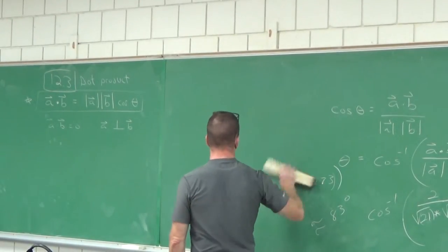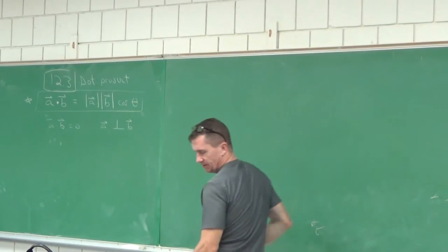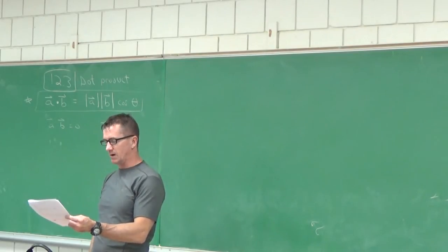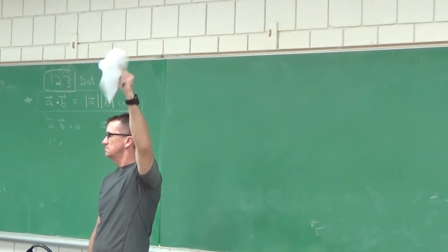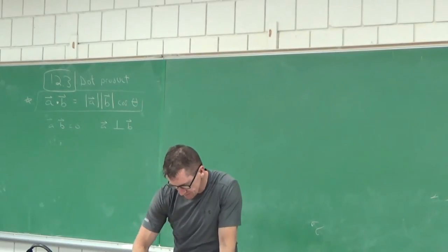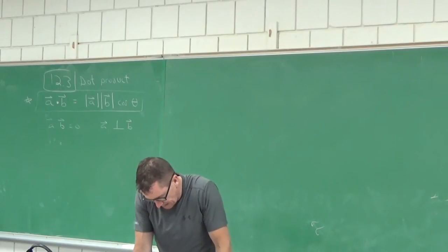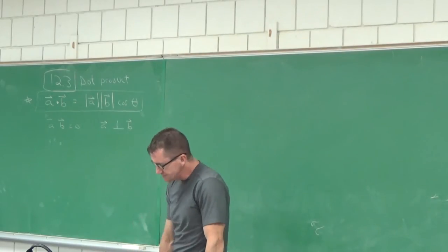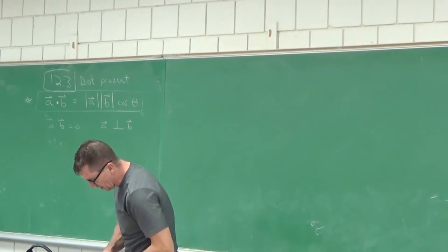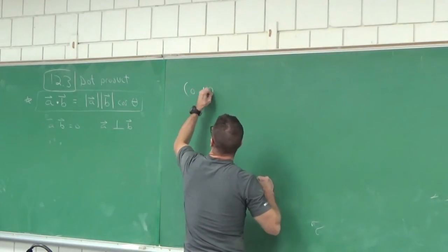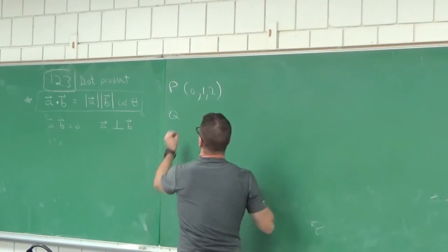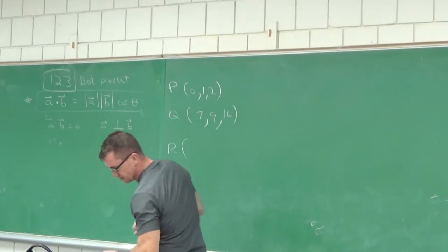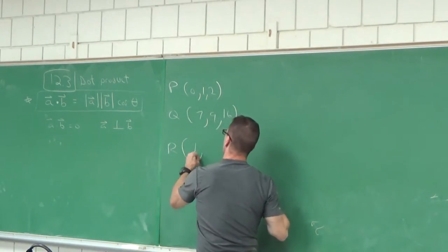So we can find the angle between two vectors. Here's a problem like in the practice set — what if you were given three points forming a triangle? How could you find one of the angles? Let's make up some points. Point P is zero, one, two. Point Q is seven, nine, sixteen. Point R is one, five, nine. Can you find the interior angle between vectors PQ and PR?